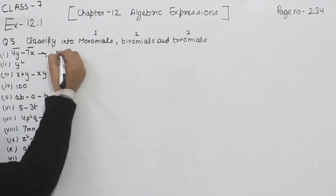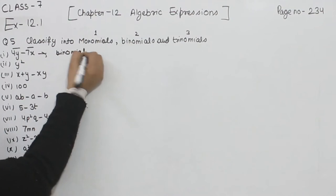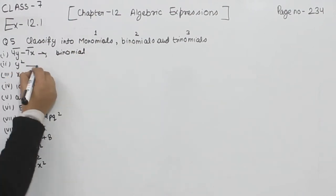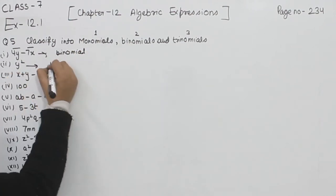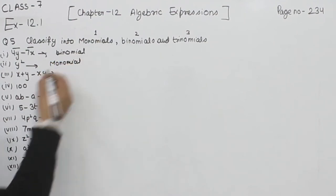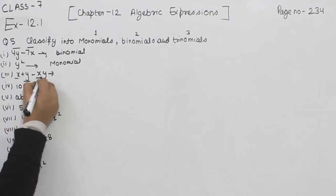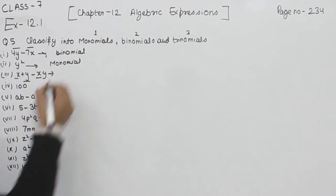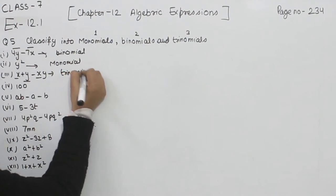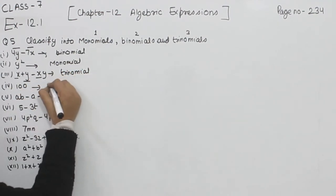So we are going to write here: binomial. Now this one, y square, contains only one term — this is monomial. Now x plus y minus xy has three terms, so this one is trinomial. Now 100 — only one term is there.